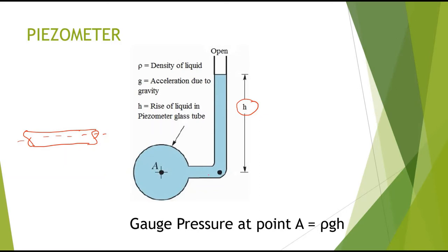Point A is the location where we measure pressure. The distance from point A to the top surface of liquid in the piezometer is h. So gauge pressure at point A equals ρgh. This is the simplest device for measuring gauge pressure of a liquid flowing through a pipe or in a stationary fluid.